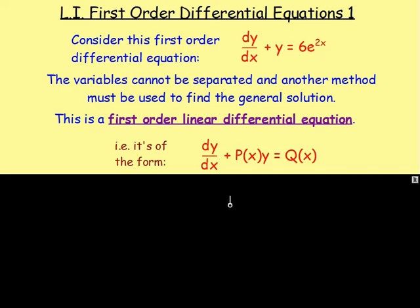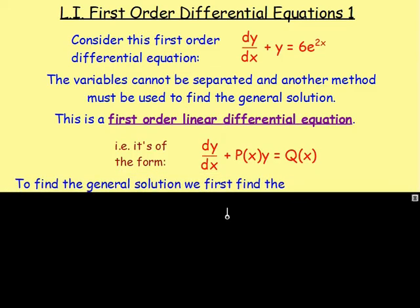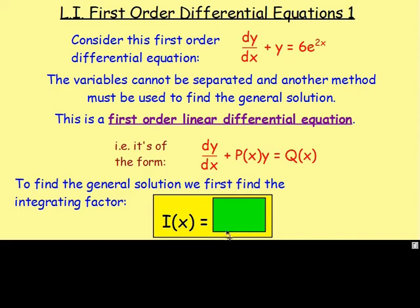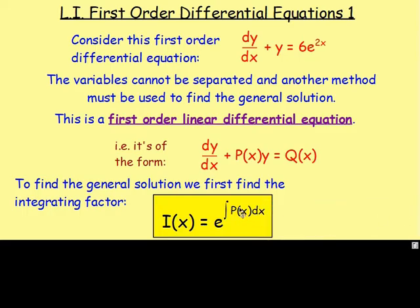First order linear differential equations are of the form dy/dx plus something y equals something. The bit in front of y we know as P(x), and on the right-hand side, whatever is there, we call Q(x). So to get back to your general solution, what we need to do first of all is get what's known as your integrating factor. And the integrating factor is e to the power of the integral of P(x). Remember, P(x) is whatever is in front of y. So we integrate that, and it's e to the power of that. That is your integrating factor.